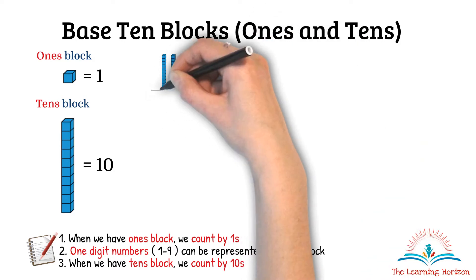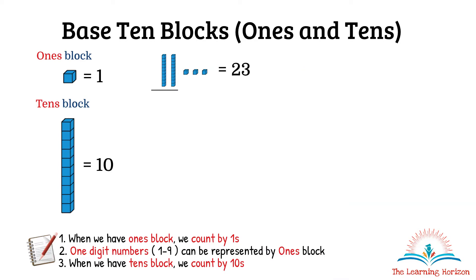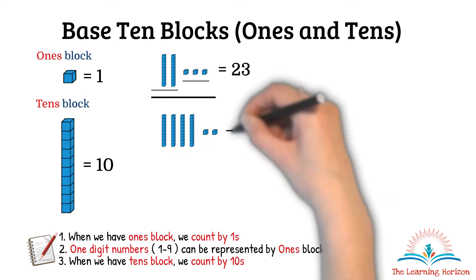Let us count: 10, 20, 21, 22, 23. As you observe, when counting the tens blocks I was counting in tens, and when counting the ones blocks I was counting in ones. So the value is equal to 23. Let us look at another example: 10, 20, 30, 40, 41, 42.